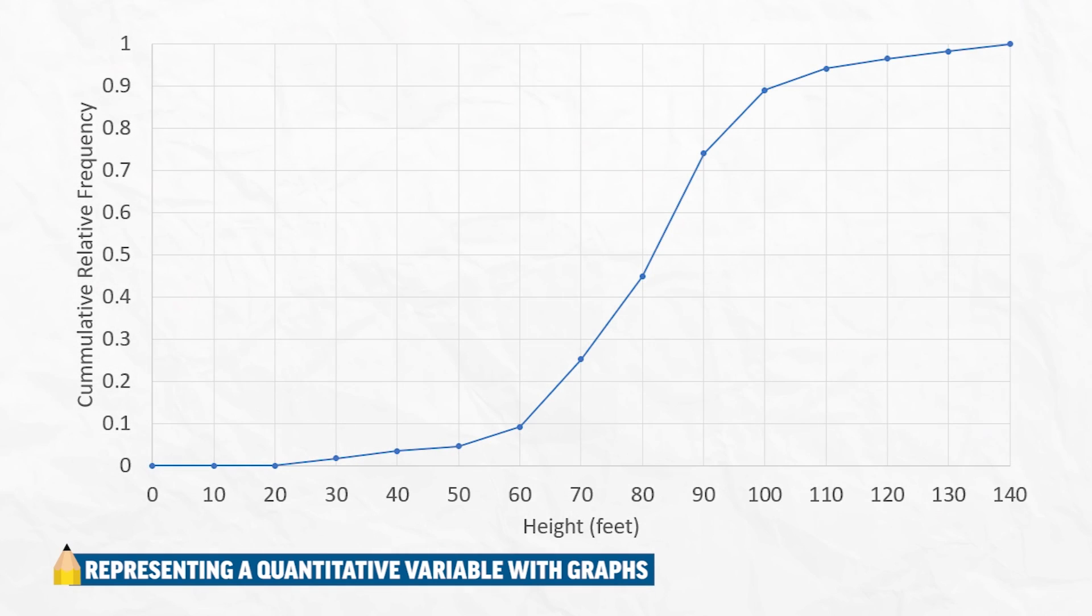Now, the fourth type of graph is called a cumulative graph. These are really cool graphs that you actually don't see too often, but they're really valuable. Here we see a bunch of dots connected by lines. Every dot has an X and it has a Y. For example, there's a dot at 80 on the X, that's 80 feet, and 0.45 on the Y. What that means is that 45% of all the trees in our sample were below 80 feet.